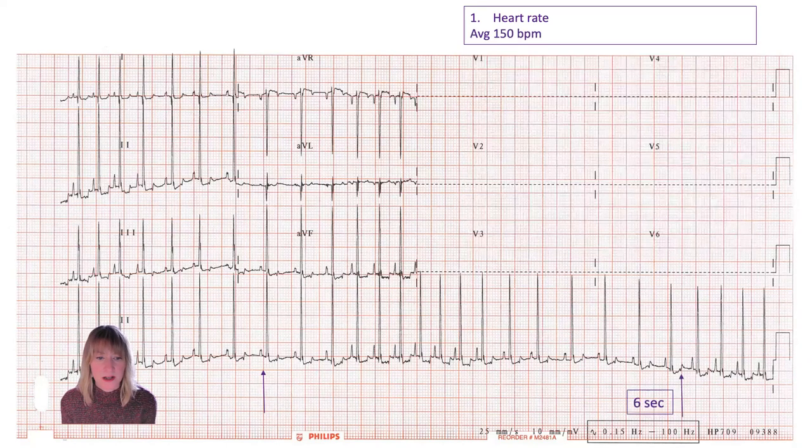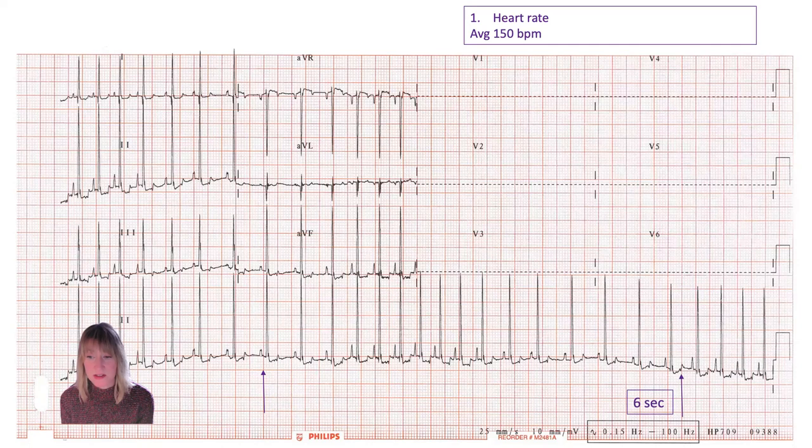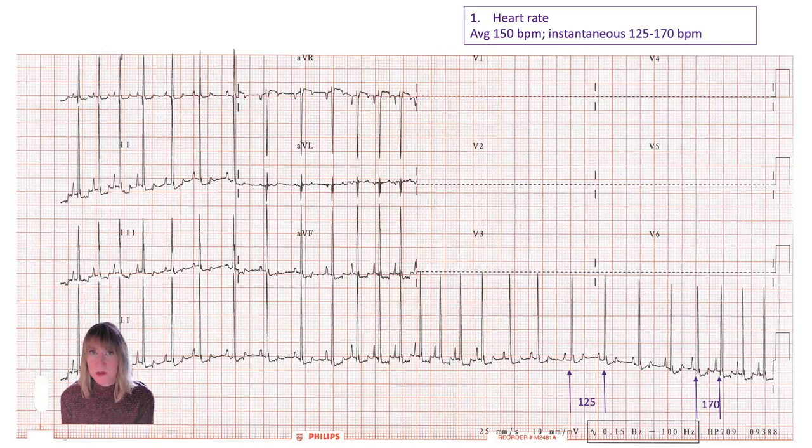If we start with heart rate, I know that the rate is changing, just visualizing it. I can see it speeding up and slowing down. I made myself a six-second ruler between the arrows, and if I count the heartbeats within that six-second ruler, I get an average heart rate of 150. That's one way I could approach heart rate. I could also still do an instantaneous heart rate. If I'm going to do that, I'm going to select a long cycle and a short cycle to give myself a range. When I do that using the 300 rule, I get between 125 and 170, so that gives me an idea of instantaneous range.